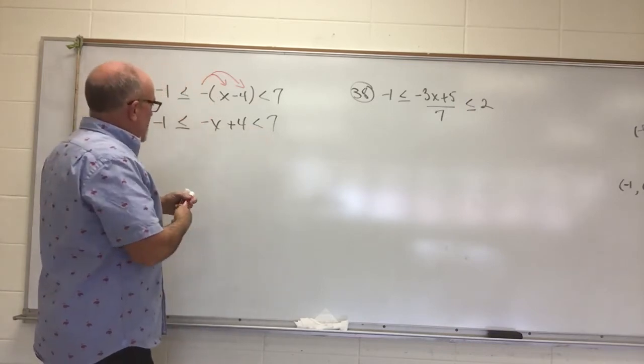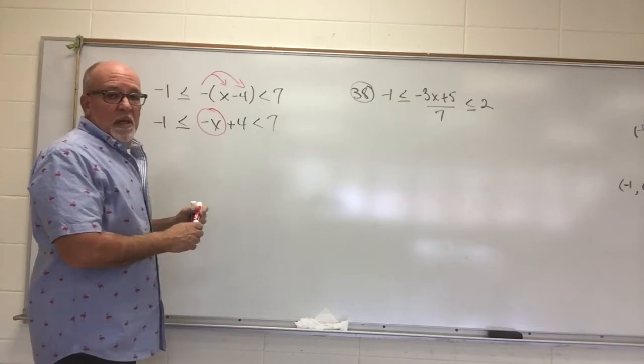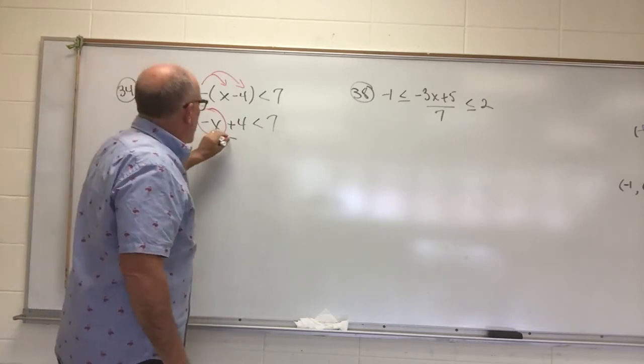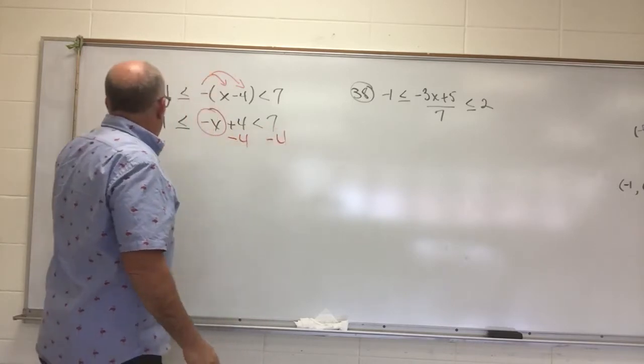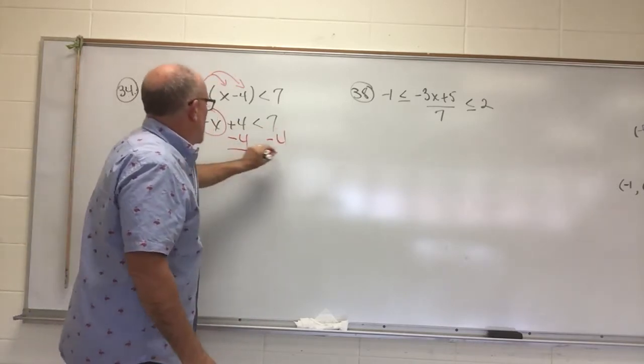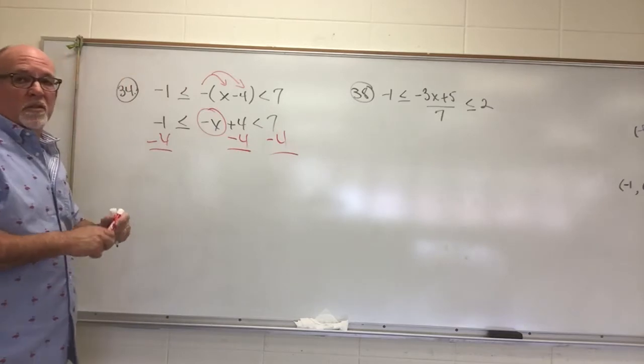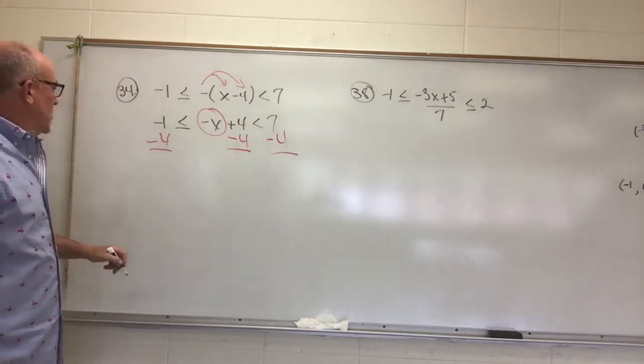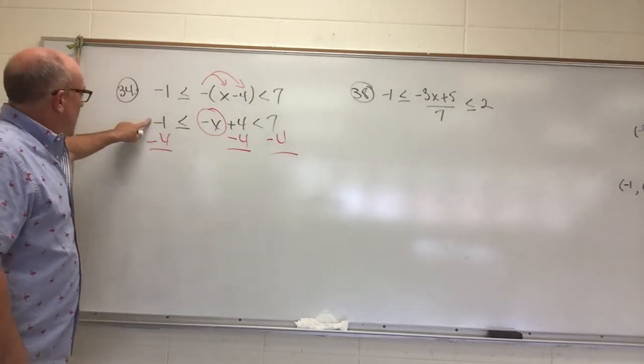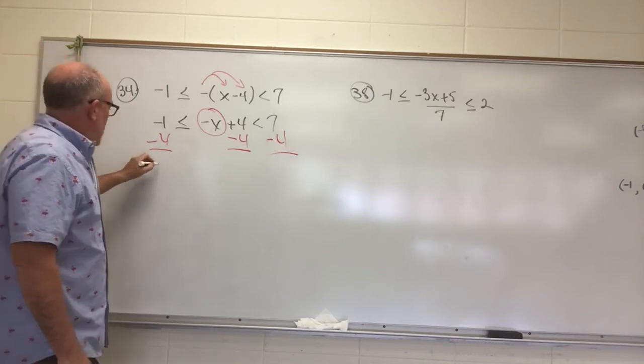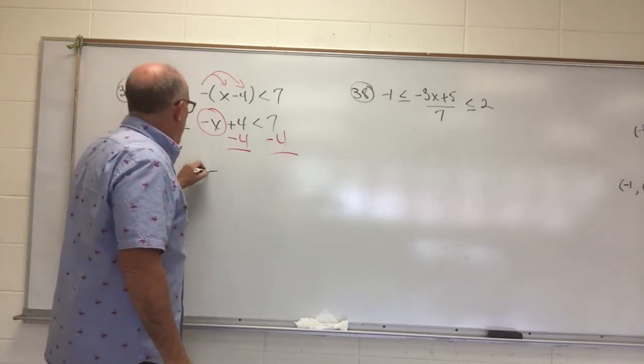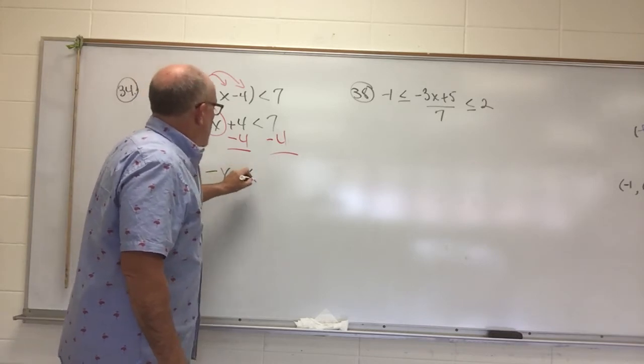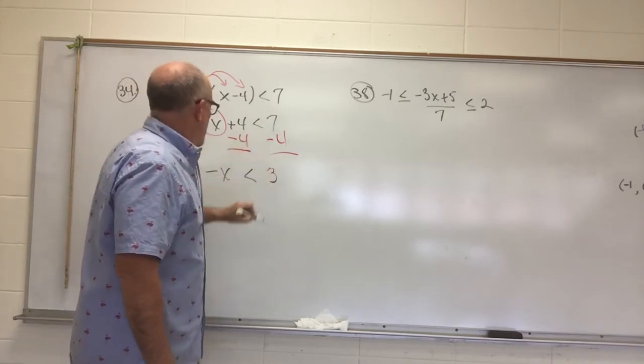I want to isolate this, so I need to get rid of this 4. If it's subtract 4, instead of doing it twice, you're actually going to have to do it 3 times. Each side of the inequality as well as the center. So we've got a negative 1 minus 4 should result in a negative 5, less than or equal to a negative x, less than, and 7 minus 4 should give us 3.